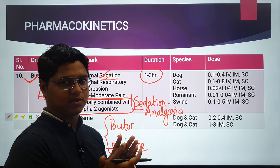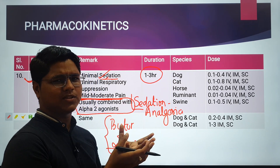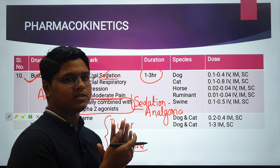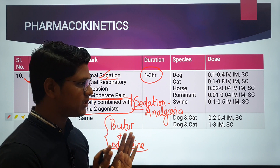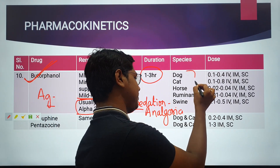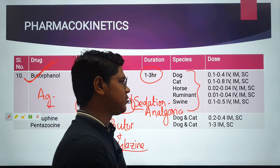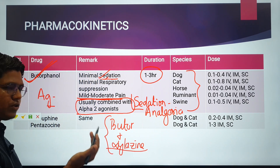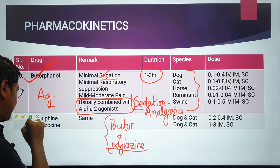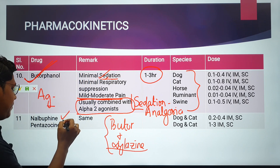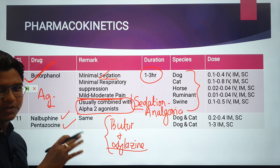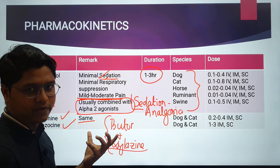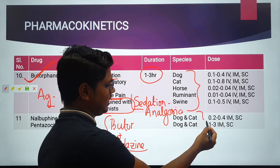Butorphanol has been used in many species: dog, cat, horse, ruminant, and swine. There are also other agonist-antagonists like nalbuphine and pentazocine, not commonly used in veterinary medicine, but they have similar action to butorphanol and are used in dogs and cats.